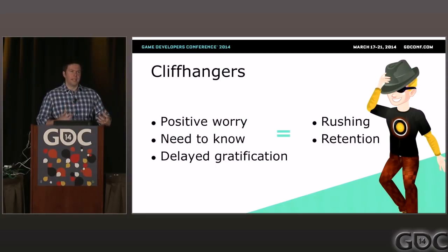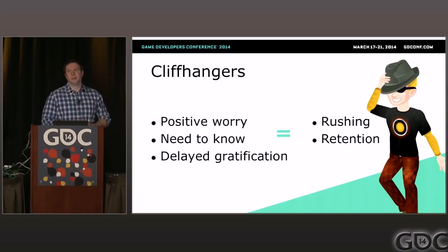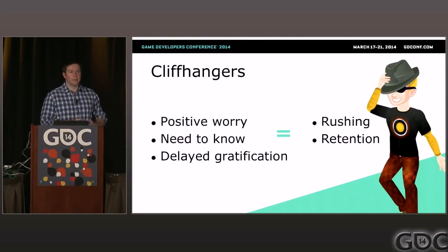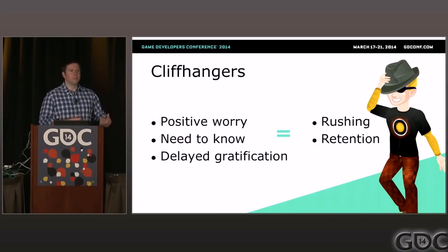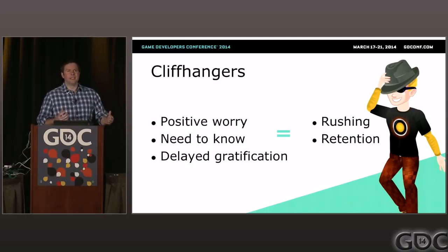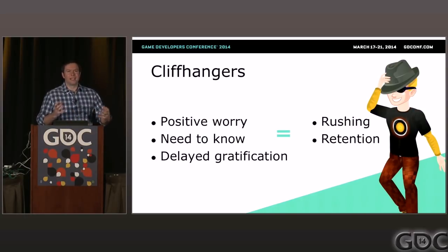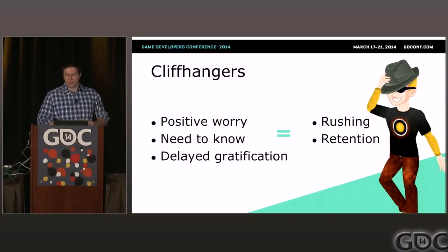For cliffhangers, if you're going to implement them, focus on these things. First is positive worry: you love your grandmother — if she's sick, you want her to get better. The same is true of classmates in the school; if players care about them and they're in a tight spot, the players will want to see them out of that spot. Second is need to know: the Pandora quest is a good example — if you have a mystery or puzzle that will be solved, fans are eager to move forward. Third is delayed gratification: everybody has a favorite TV show — there's a big explosive season finale and you're wondering what's going to happen next. You're going to have to come back in the fall when the show starts back up again.